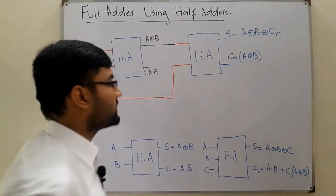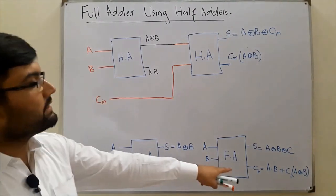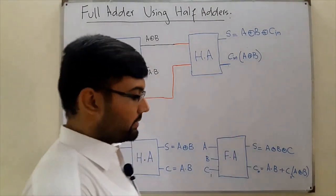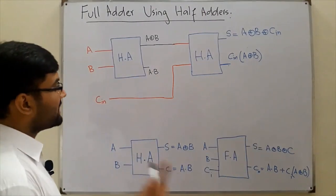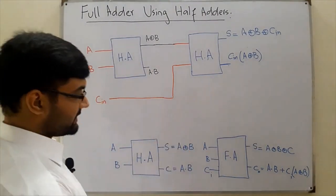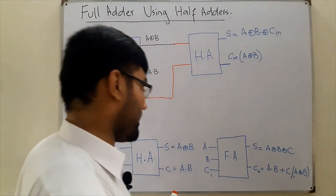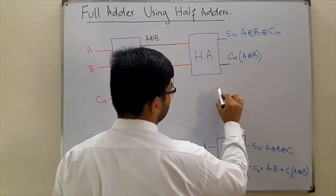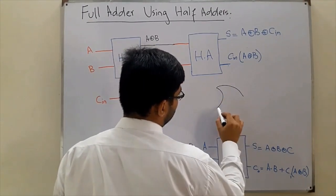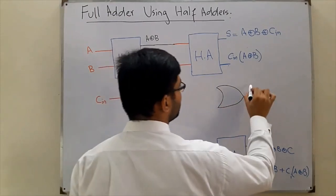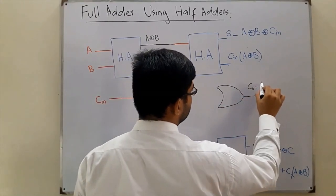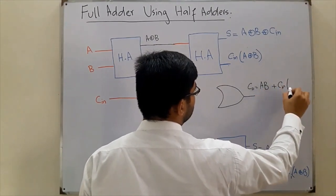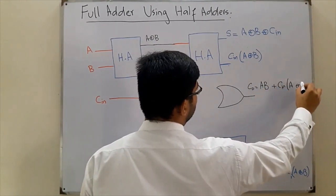The sum is correct, but the carry is not yet correct. We need to OR the carry from the first half adder (A AND B) with the carry from the second half adder (C-in AND A XOR B). So we require one OR gate along with the two half adders. This OR gate finally gives the carry output: A AND B plus C-in times A XOR B.